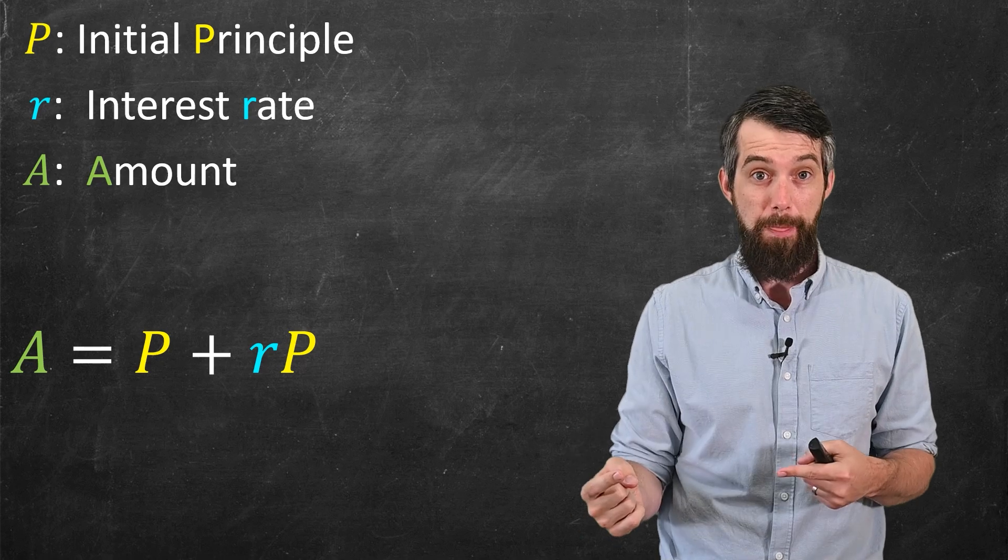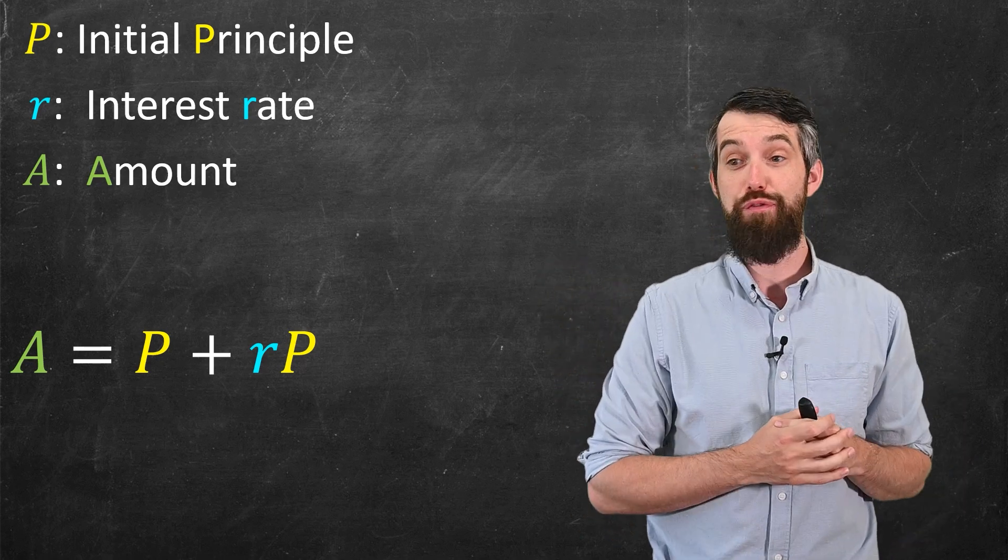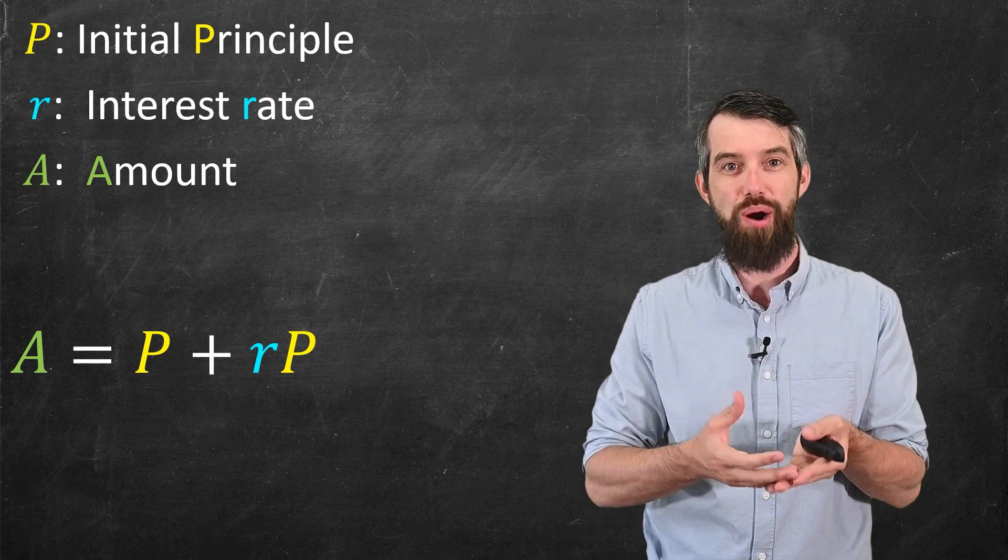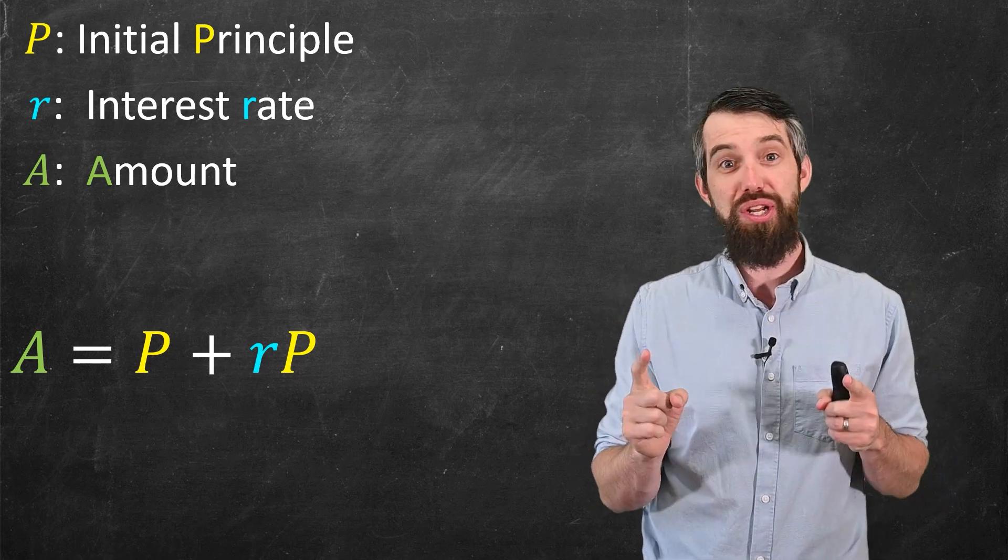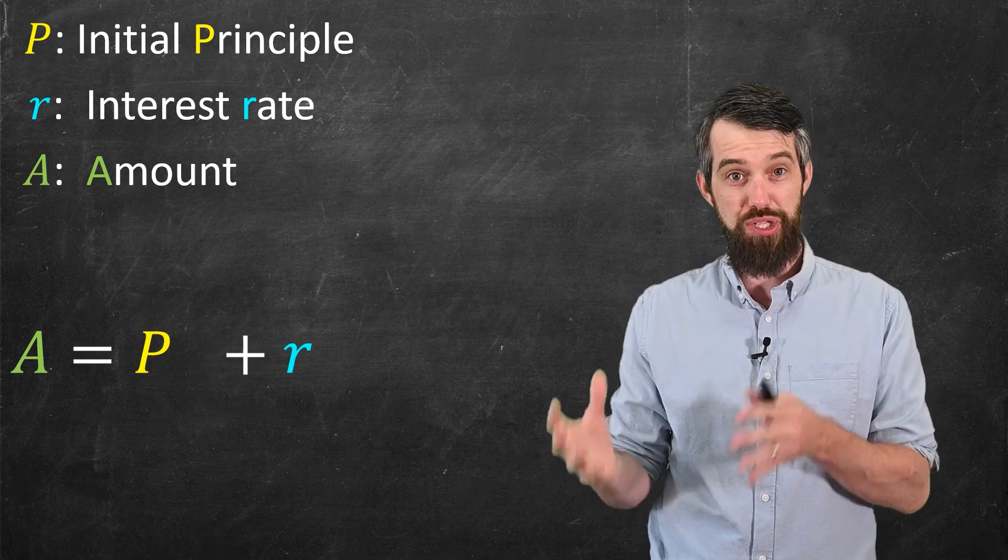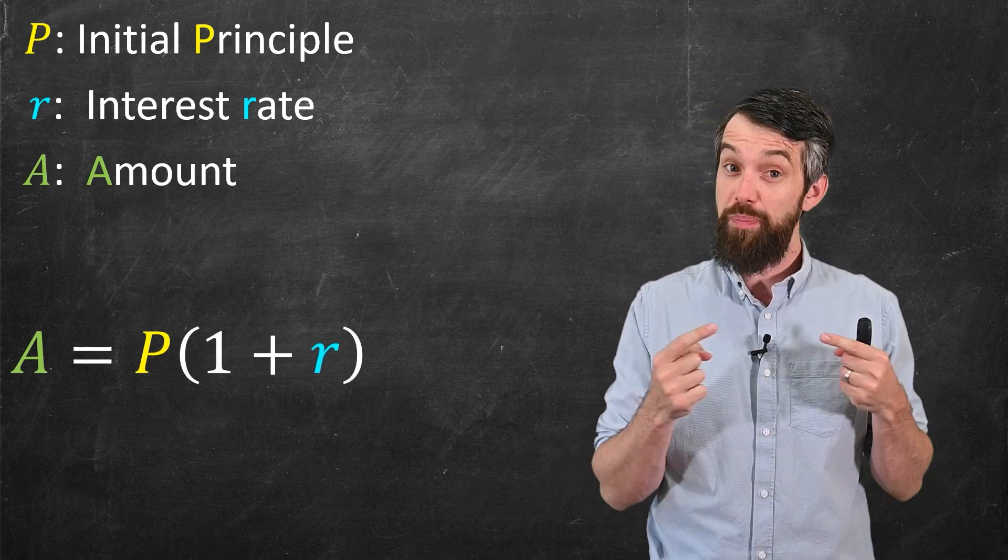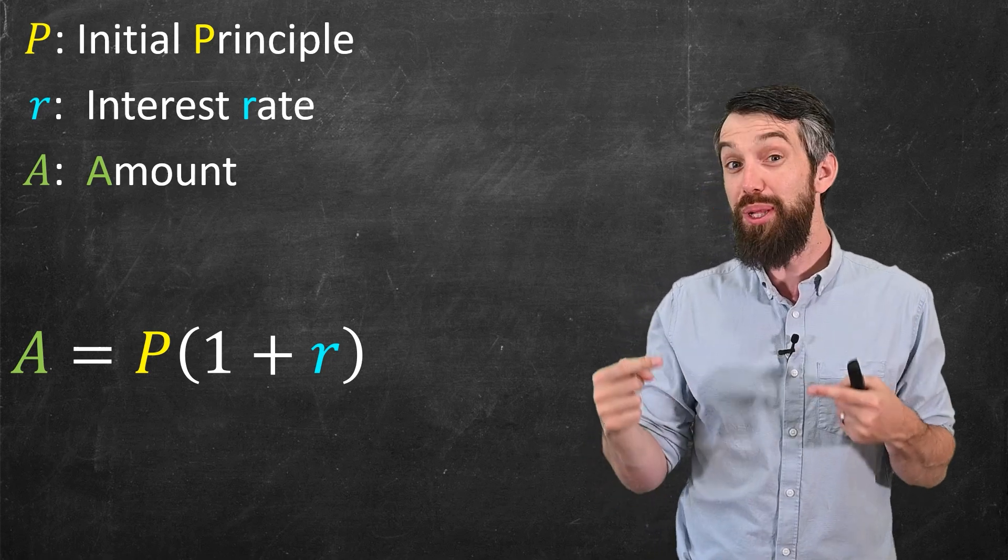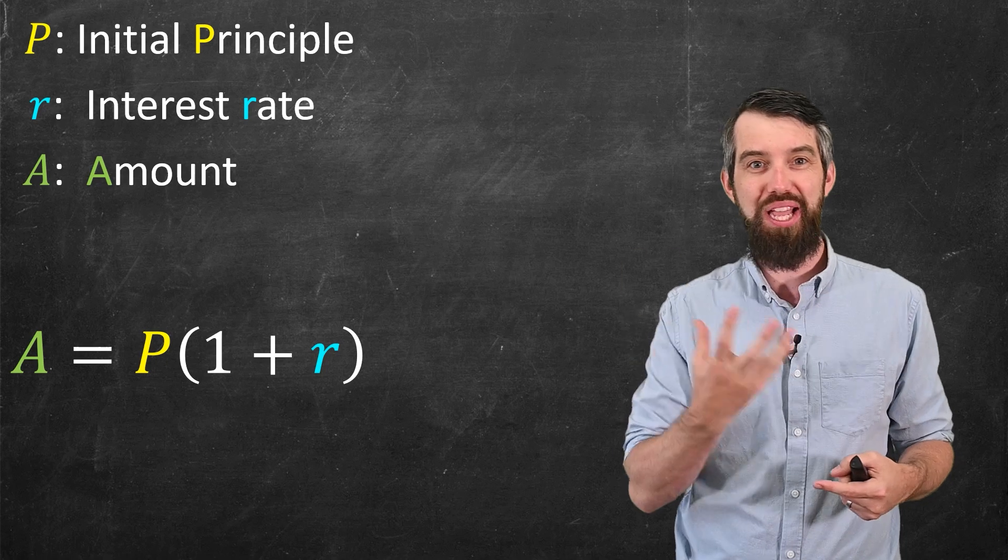The principal comes back, and then I also get an interest payment, the R times P. And I'm actually going to go and factor out the P at the beginning this time, so make this P times 1 plus R. And the way I think about this is that the P represents, well, the amount that was lent out. And then the 1 plus R is the multiplicative factor.